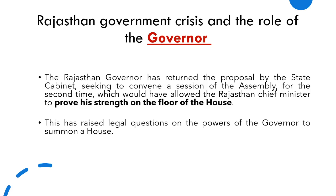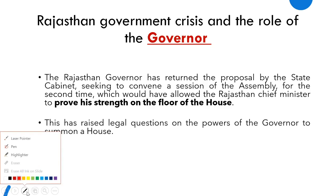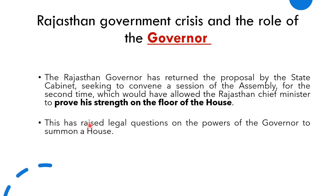The Rajasthan governor returned a proposal by the state cabinet which wanted to convene a session of the assembly. The Rajasthan government sent a proposal to the governor to call the assembly session, but the Rajasthan governor returned the proposal and did not call the assembly session. The chief minister had to prove his strength on the floor of the house, but he was not able to do so because the assembly was not convened. These things raised some legal questions as to the powers of the governor.